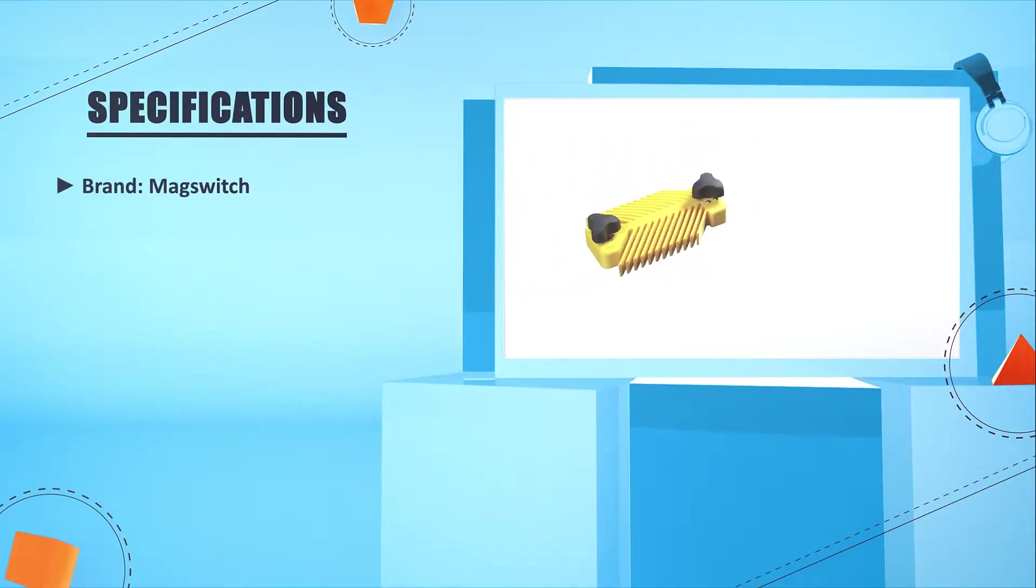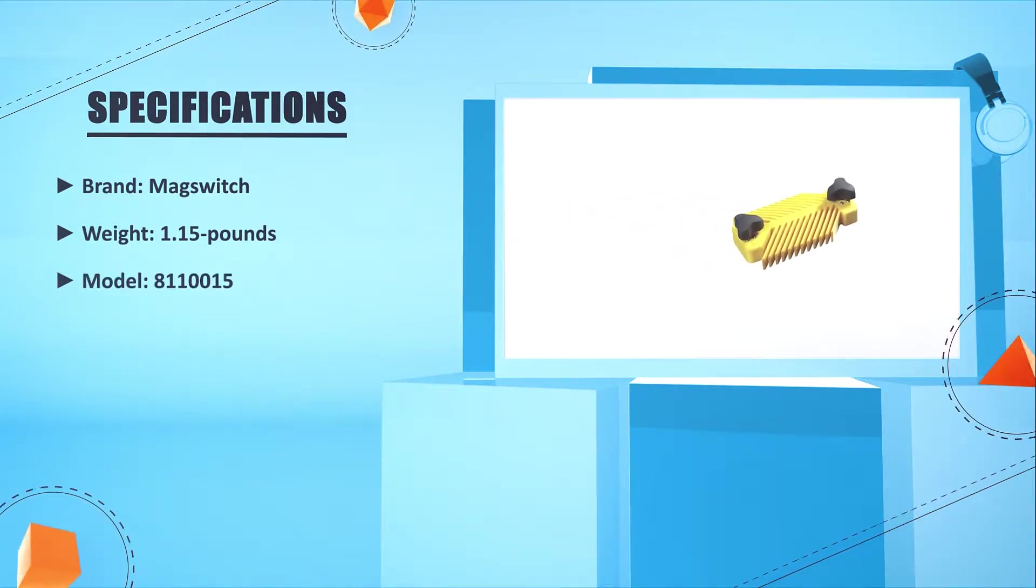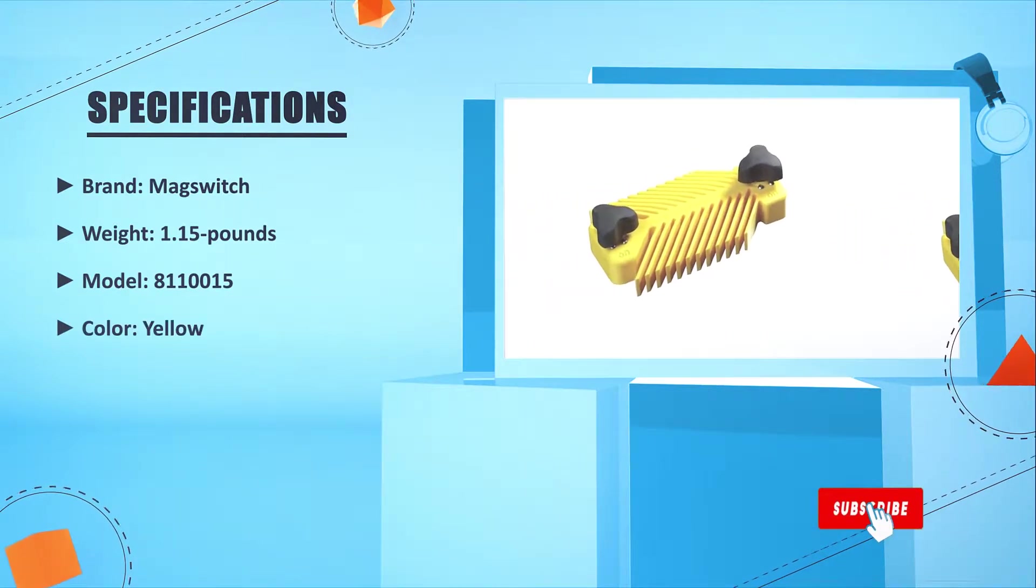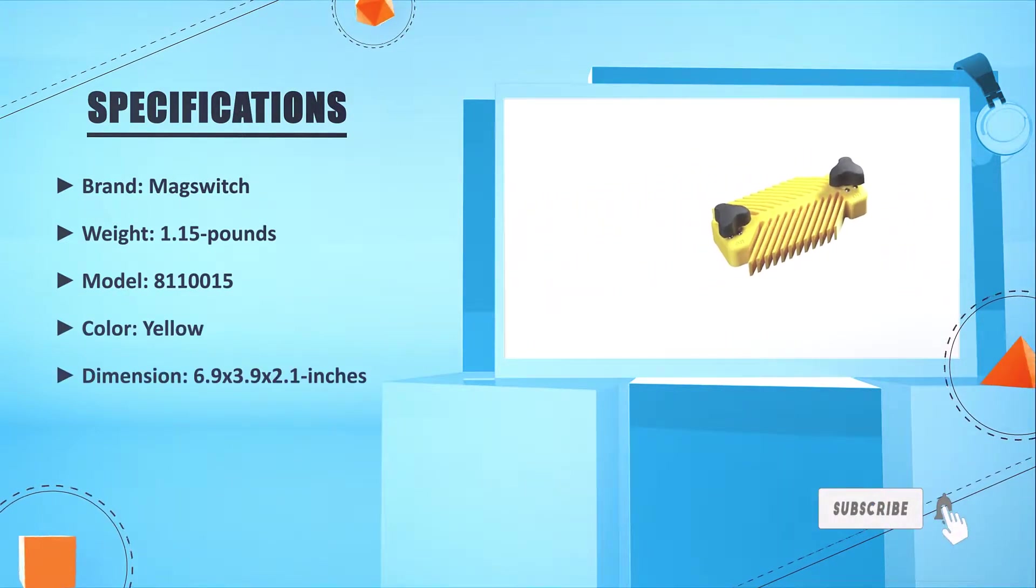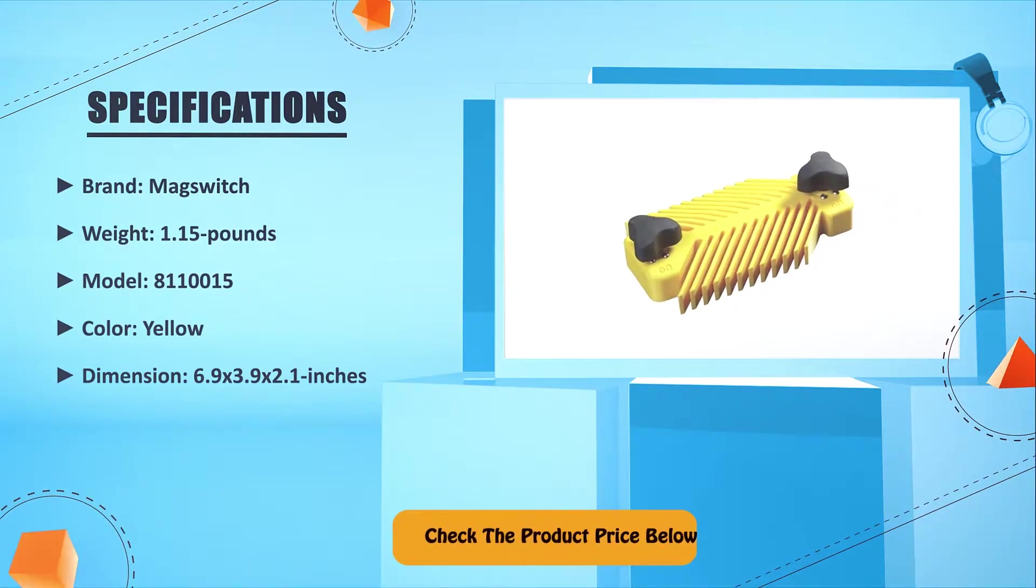Brand: Magswitch. Weight: 1.15 pounds. Model: 8110015. Color: yellow. Dimension: 6.9 by 3.9 by 2.1 inches. Check the product price below.